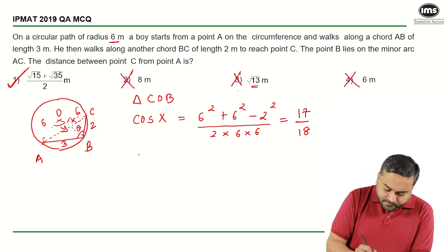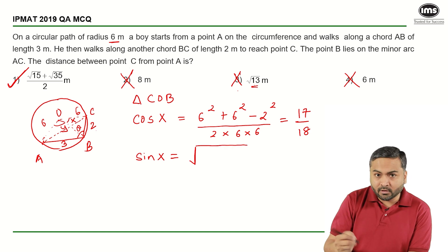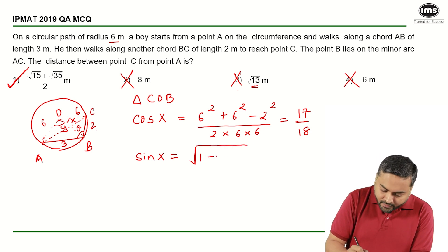In the same triangle, if I want to find sin x, so I can calculate sin x as under root of 1 minus cos x the whole square, that is 1 minus 17 upon 18 the whole square, and we get this as root 35 by 18.